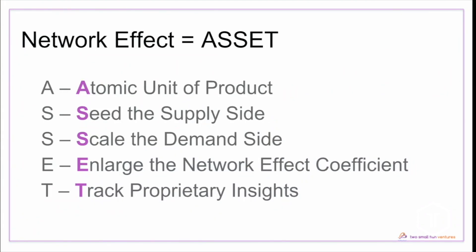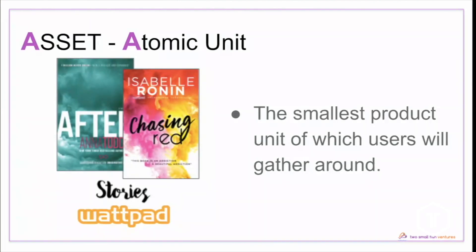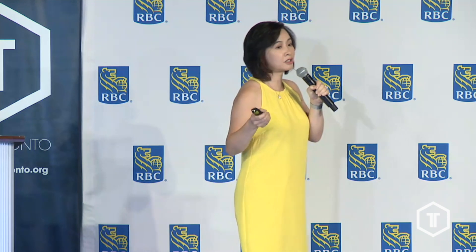I summarized that pattern into this framework: Network Effect equals ASSET. Let's start with the letter A in ASSET — it stands for Atomic Unit. It is the smallest product unit around which your users will gather. Think about Facebook: a post is the atomic unit. Twitter's is a tweet, Uber's is a ride, and for Wattpad the atomic unit is a story.